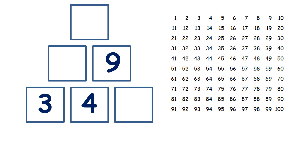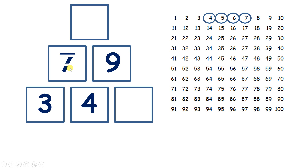So if we want to know which number to write in this square here, we need to add three and four. So if we're on four and we count on one, two, three, we get to seven. So we can write seven above three and four.